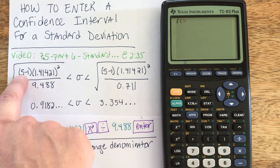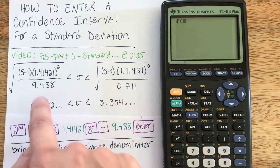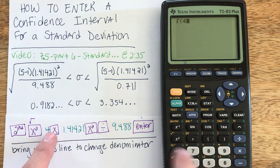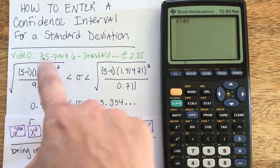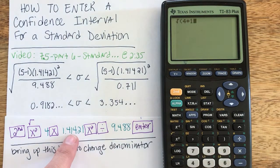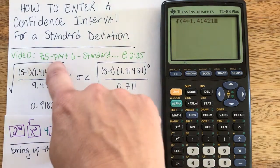So my sample size n minus 1, or my degrees of freedom, in this case 5 minus 1 is 4. I'll do that in my head. Now I'm going to multiply with s, my sample standard deviation, which is 1.41421. This quantity is squared.